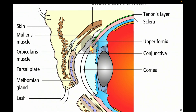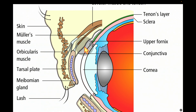When the bulbar conjunctiva goes into the fornices and reflects back from the posterior surface of the lid, it forms the tarsal conjunctiva. This conjunctiva, along with the tarsal plate, forms the posterior lamella.